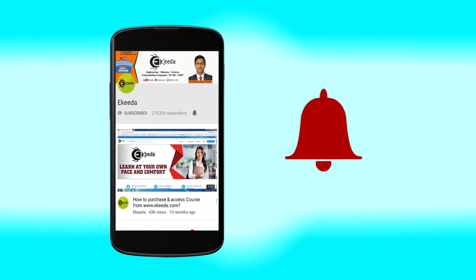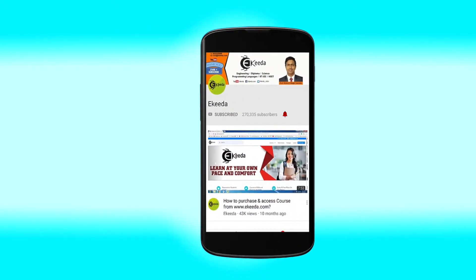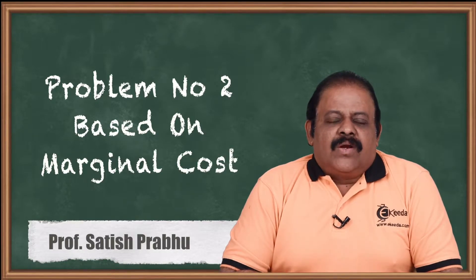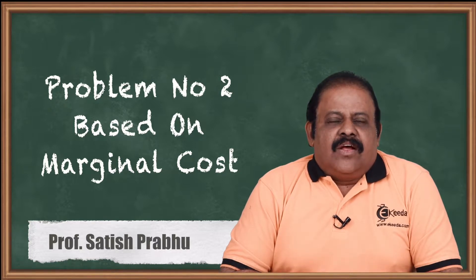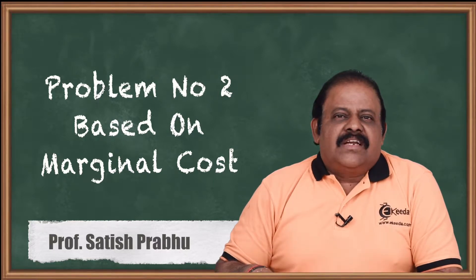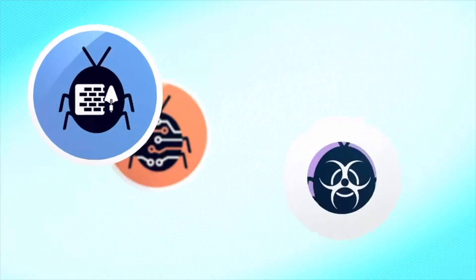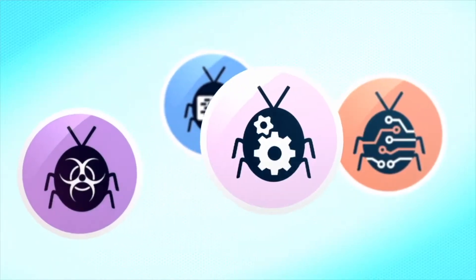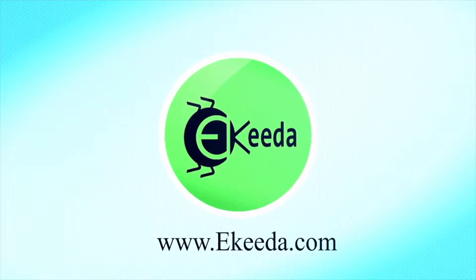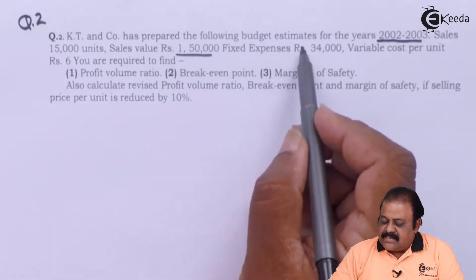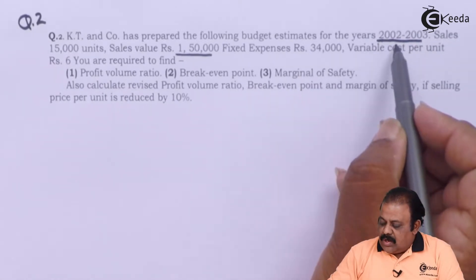Hello friends, today we'll be discussing one question of marginal costing where data relating to the current year is given and we are also required to estimate data for the subsequent year. Let us start with the question: Katie and Company has prepared the following budget estimates for the year 2002-2003.